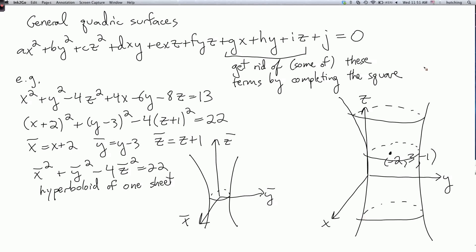So completing the square corresponds to translating the surface. In other words, shifting it in the x, y, and z directions. So whenever you have extra linear terms, that means that you have a translated surface.